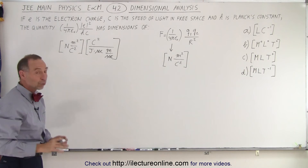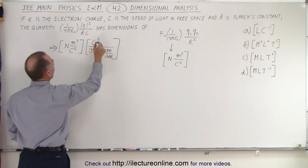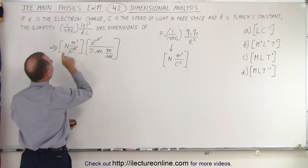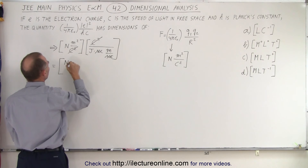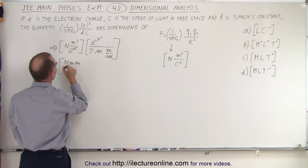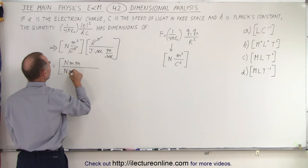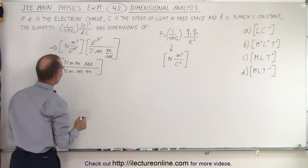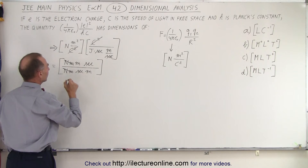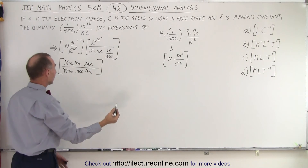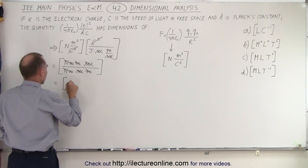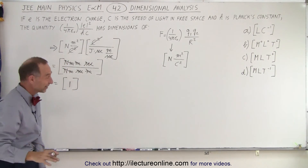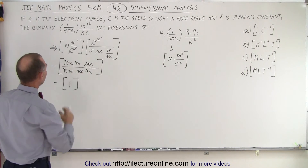We can simplify things right away. We have Coulombs squared cancelling Coulombs squared. Joules is a newton-meter, and we have a newton-meter squared, so the numerator becomes newton-meters times meters. Dividing by joules — which is a newton-meter — and seconds, with the seconds moving to the numerator. The newton-meter cancels, seconds cancel, and meters cancel, leaving us with no units at all — which we represent as 1.